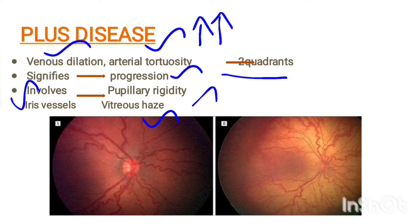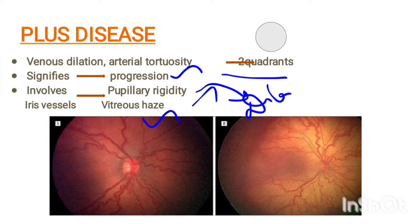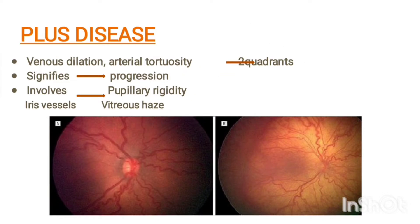Pupillary rigidity is present when the pupil is maximally dilated. Looking at the image, you can appreciate the dilatation and tortuosity of the vessels. In the image you can see the vessels are dilated at the maximum.